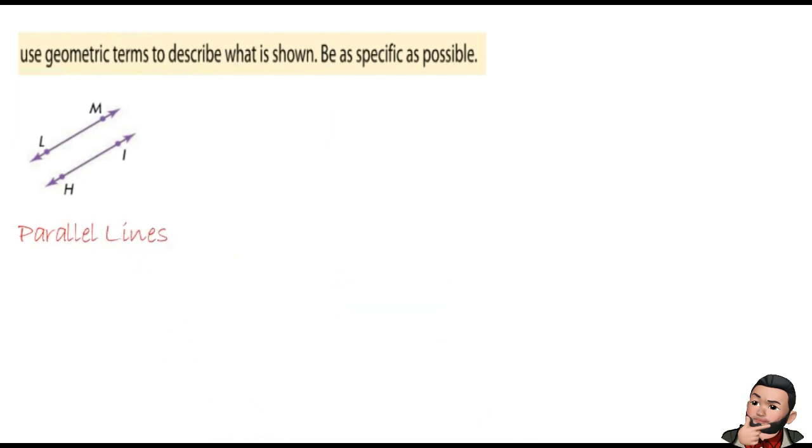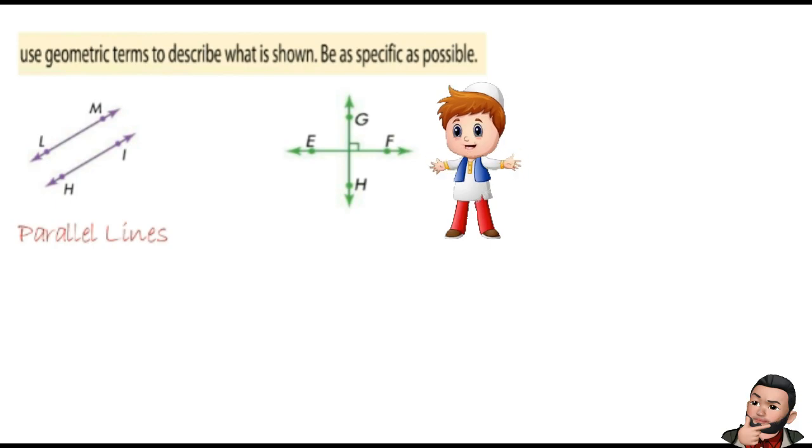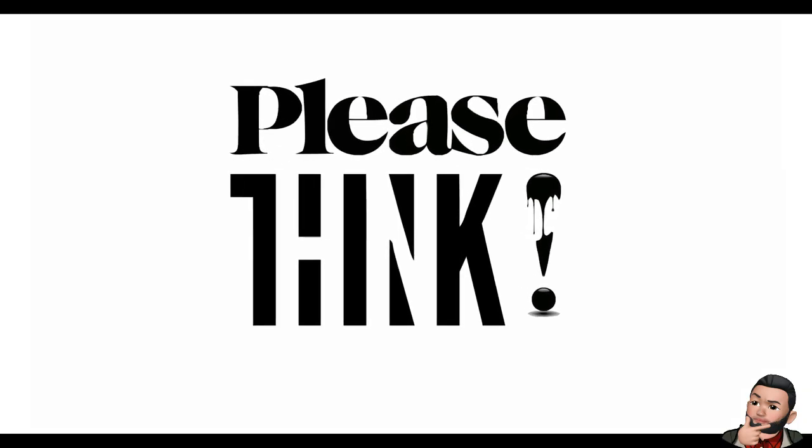We have two lines. E F is a line. G H another line. These two lines intersected at one point, so they are intersecting lines. No. Think about it again.